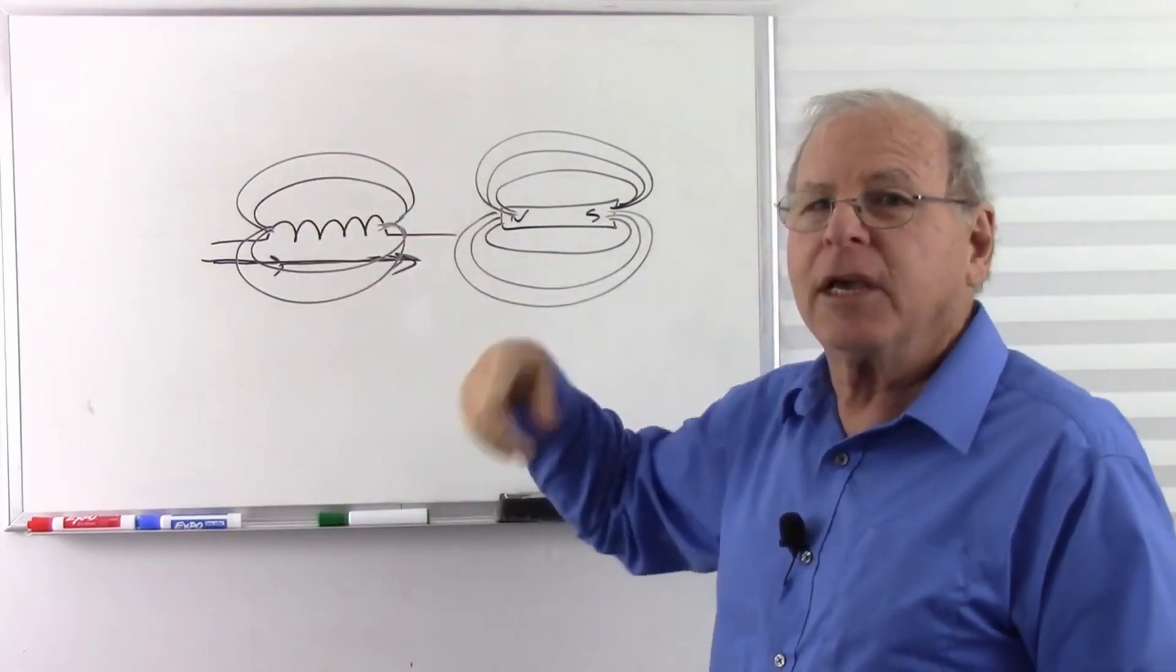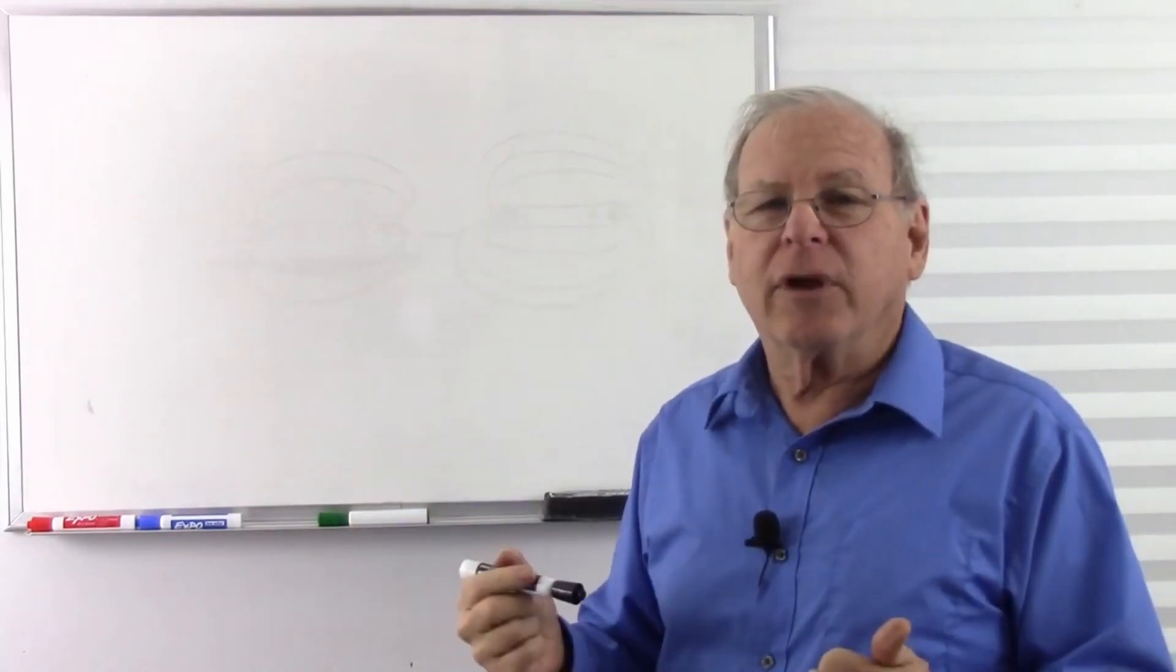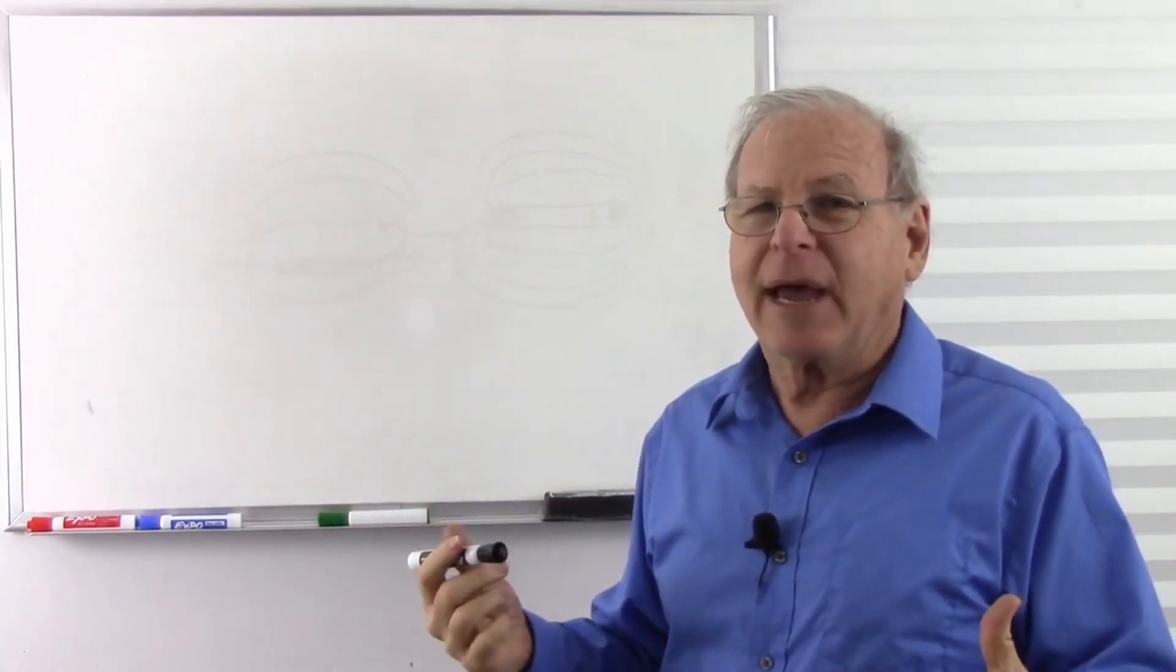We've already talked about induction. Mutual induction we'll talk about when we get to transformers. So a coil of wire with a current going through it is a magnet. That's an electromagnet.